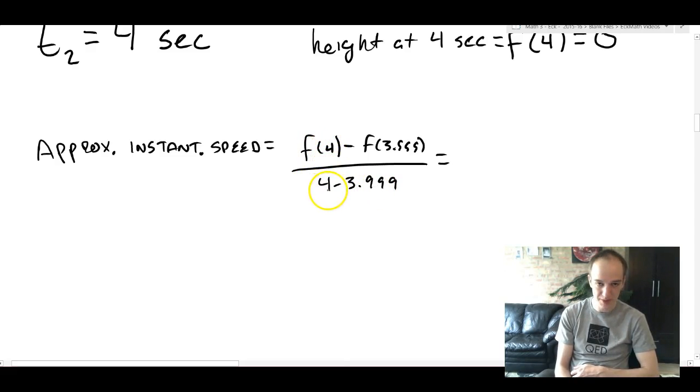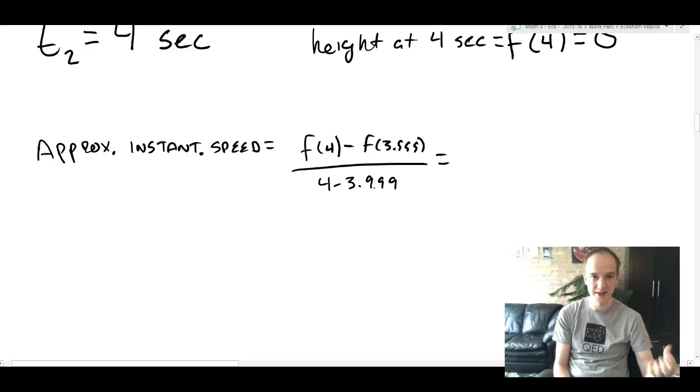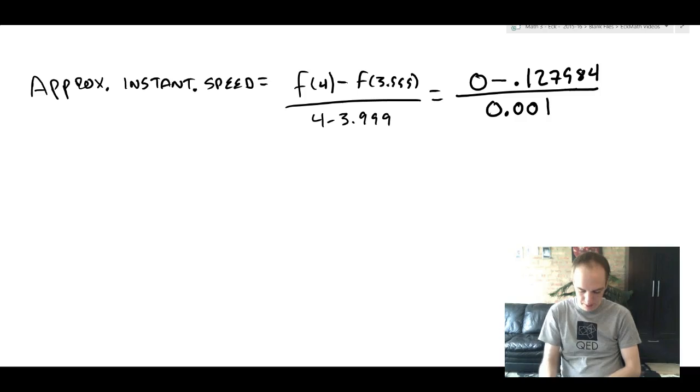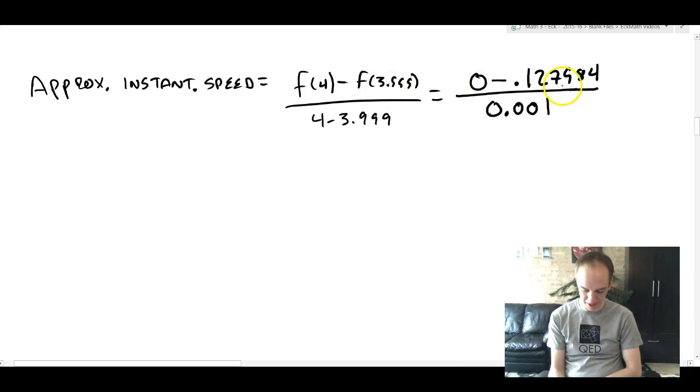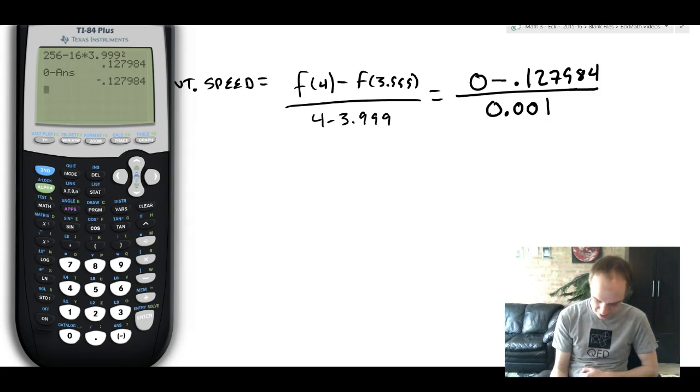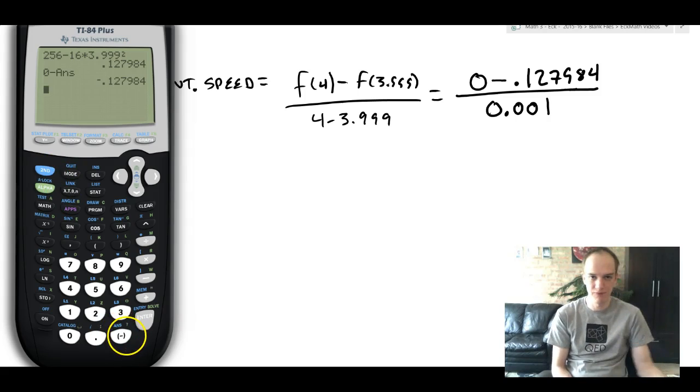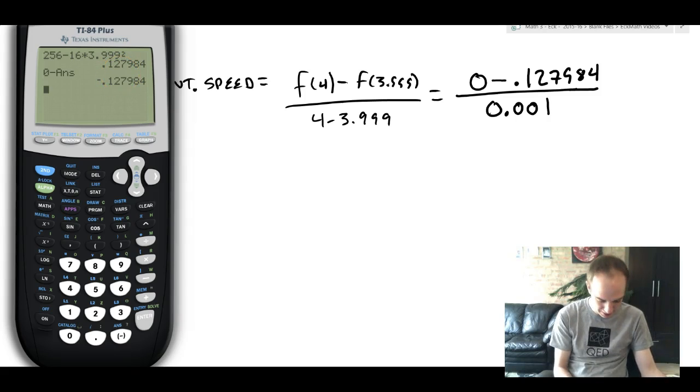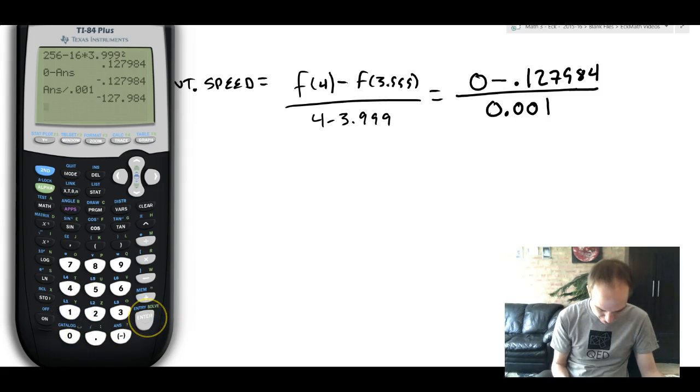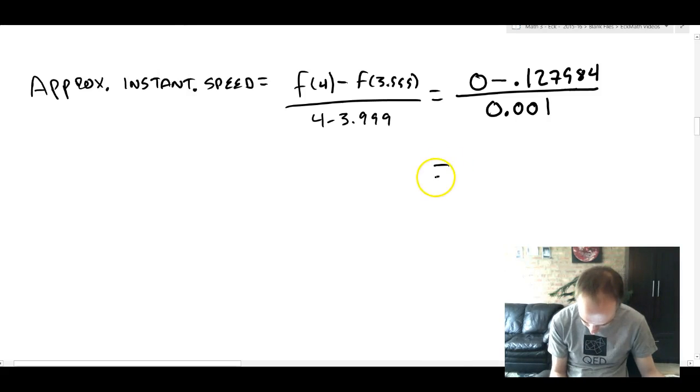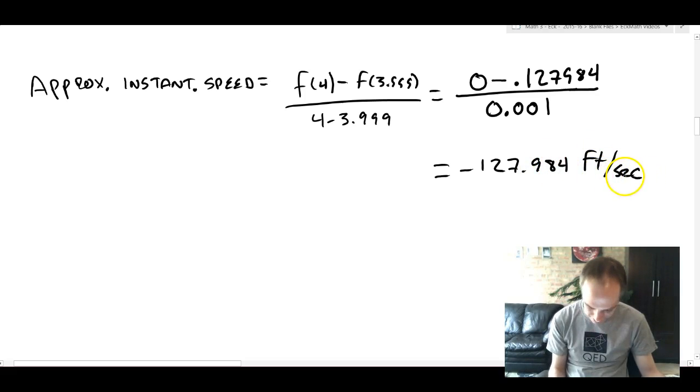I've set everything up in a difference quotient now. The approximate instantaneous speed is going to be given by doing f of 4 minus f of 3.999 divided by 4 minus 3.999. The order matters. The f of 4 has to be above the 4 and the 3.999 has to be above the 3.999. If you flip these around, you're going to get the opposite sign out of the correct answer. So now we plug the numbers from above in. This is 0.001. We're going back to the calculator now. To do the top, you can just do 0 minus and then hit second button and the little answer key. Then we'll complete the division. We'll take that answer and divide by 0.001 and we get negative 127.984 feet per second. The negative means it's going down.